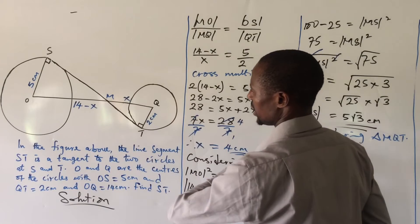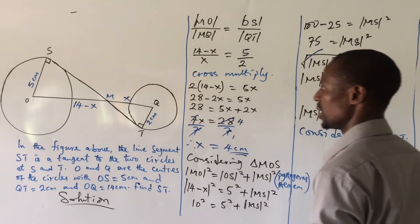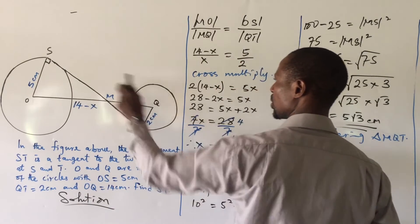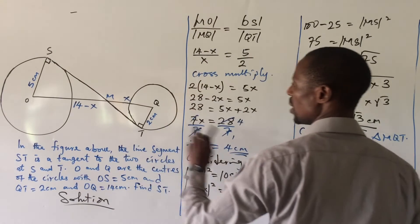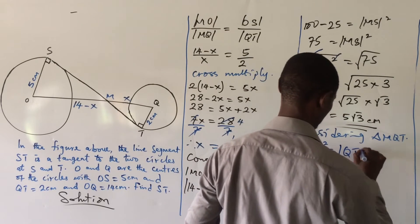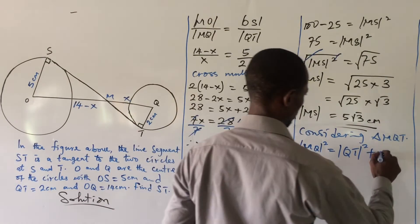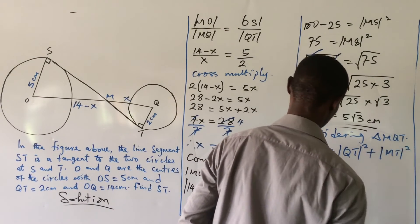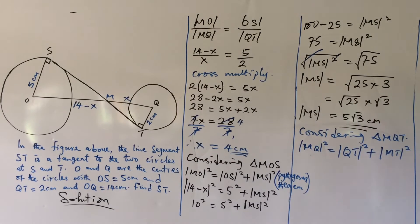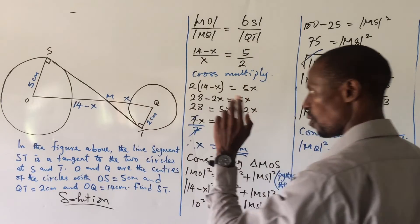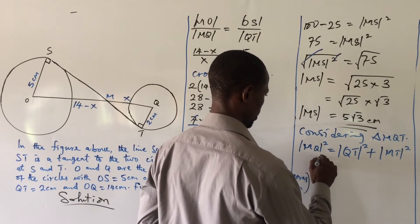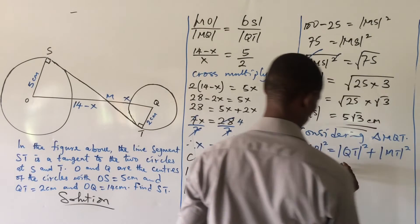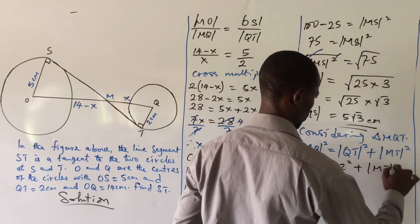In triangle MQT, MQ is the hypotenuse — the longest part, QT is one side, and MT is the other side we are looking for. Applying Pythagoras: MQ squared equals QT squared plus MT squared. MQ is 4 (our x), so: 4 squared equals 2 squared plus MT squared.